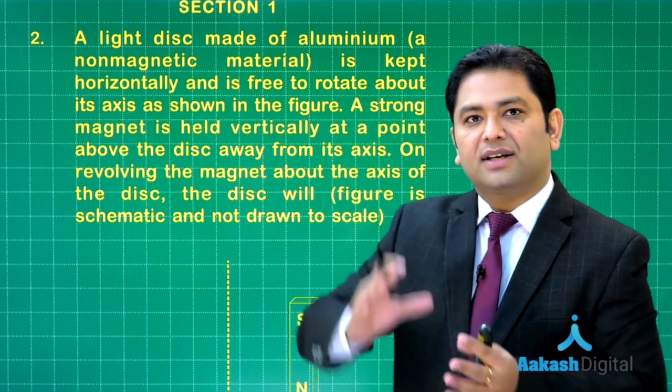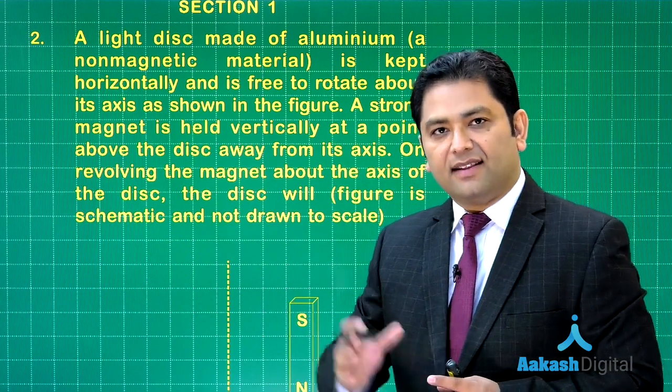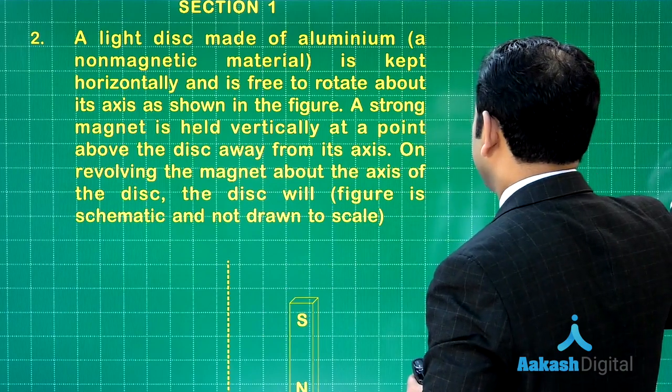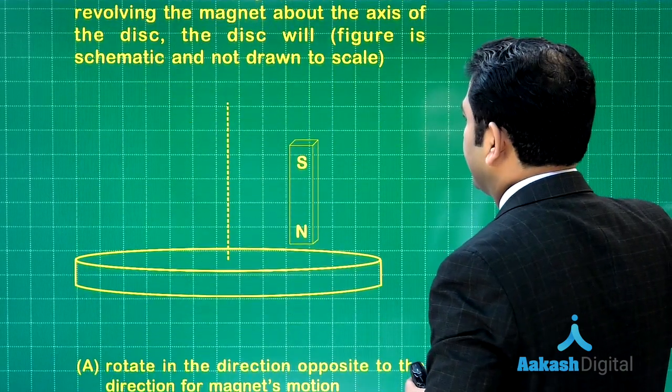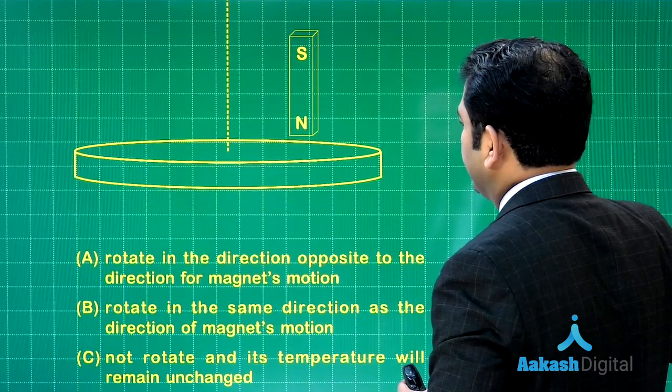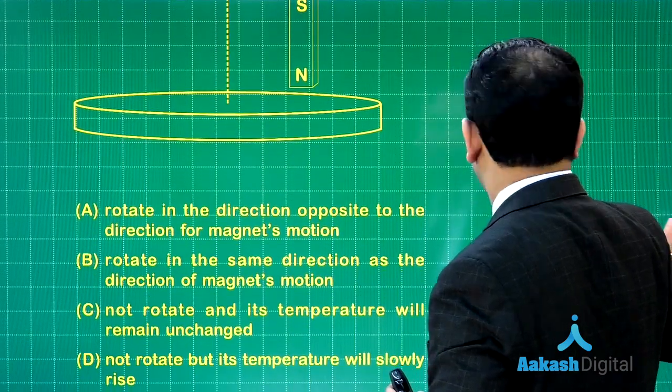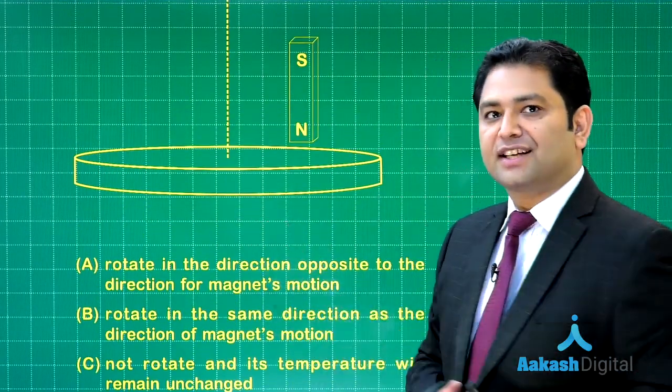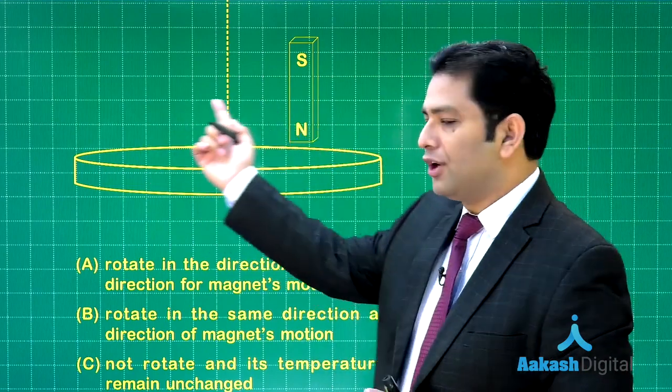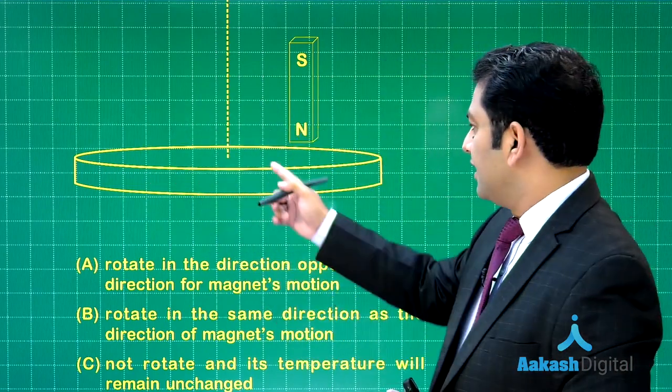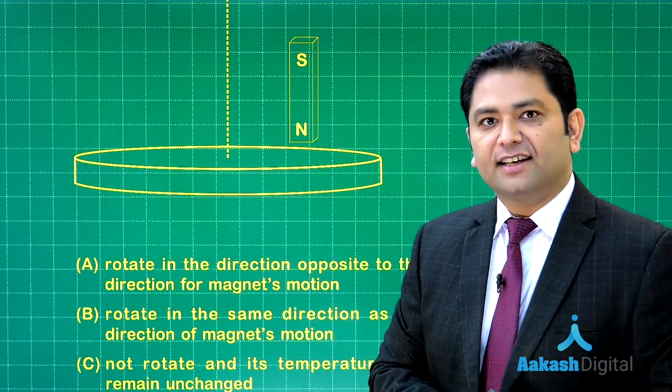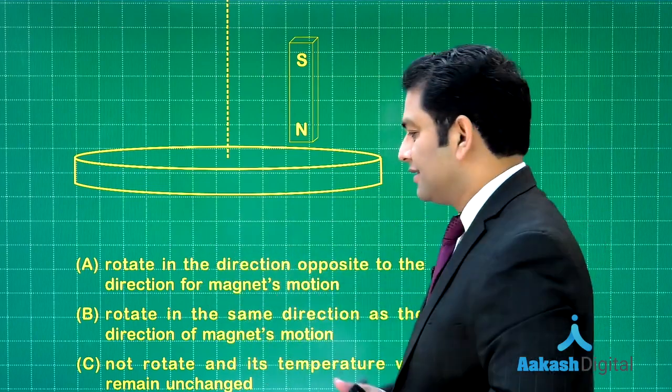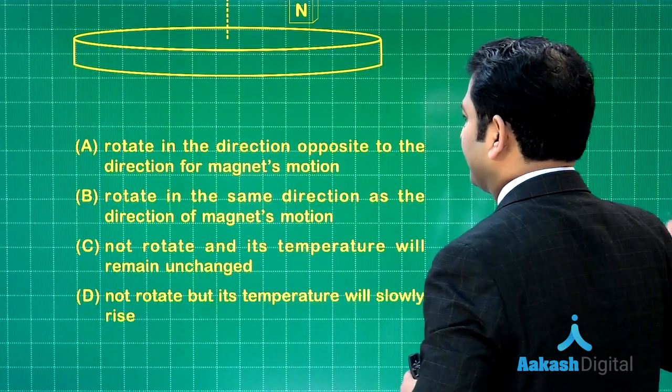If you go through the matter, you would find there is a disc and above it there is a magnet, and that magnet is started rotating. Let me show the figure. This is that aluminum disc and here is the magnet. So initially everything is at rest. The magnet has been revolved around the circumference, and we need to predict the motion of the disc and the subsequent outcome. All these options have been given here.